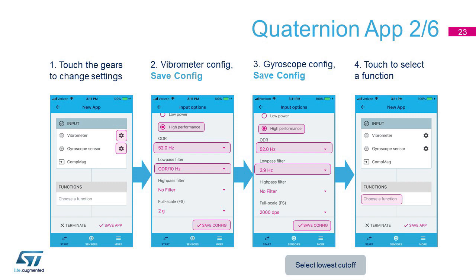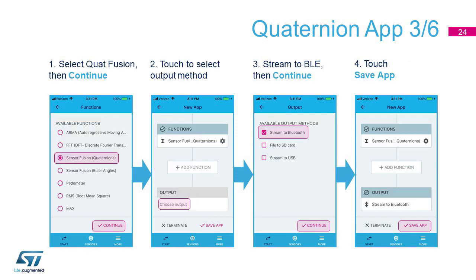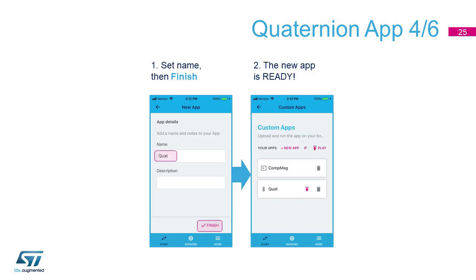Save the Input configuration and go to the Choose Function screen. Here, let's select Sensor Fusion, Quaternions, and as output, let's choose Stream to Bluetooth to see the results in real time. Let's save the app and name it Quat, for example.